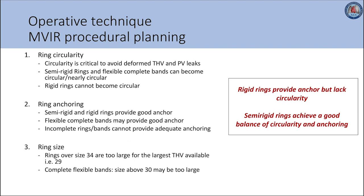Ring circularity is one important characteristic, since circularity is critical to avoid deformation of transcatheter heart valves and to avoid paravalvular leaks. Semi-rigid rings and flexible complete bands can be circular or nearly circular, whereas rigid rings cannot attain circularity due to their rigid construction. Semi-rigid and rigid rings can provide a good anchor, while flexible complete bands can only provide a good anchor if a smaller size is used. Incomplete rings and bands cannot provide adequate anchoring. Ring sizes over 34 are not suitable for mitral valve-in-ring, as the largest available transcatheter heart valve is the Sapien III in size 29. To summarize, rigid rings provide good anchoring but lack ability to become circular, while semi-rigid rings provide the best balance between circularity and anchoring capacity.